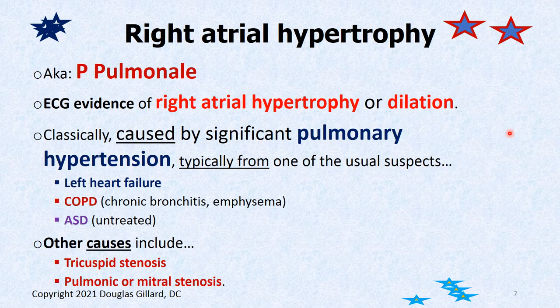The first concept is something called P pulmonale. It's an EKG finding which indicates the patient has right atrial hypertrophy, or even worse, right atrial dilation. If you have pulmonary hypertension, the right heart will muscle up trying to pump blood through the resistance downstream — but after a while the heart starts to fail. Both hypertrophy and dilation produce the EKG finding called P pulmonale, caused by pulmonary hypertension.